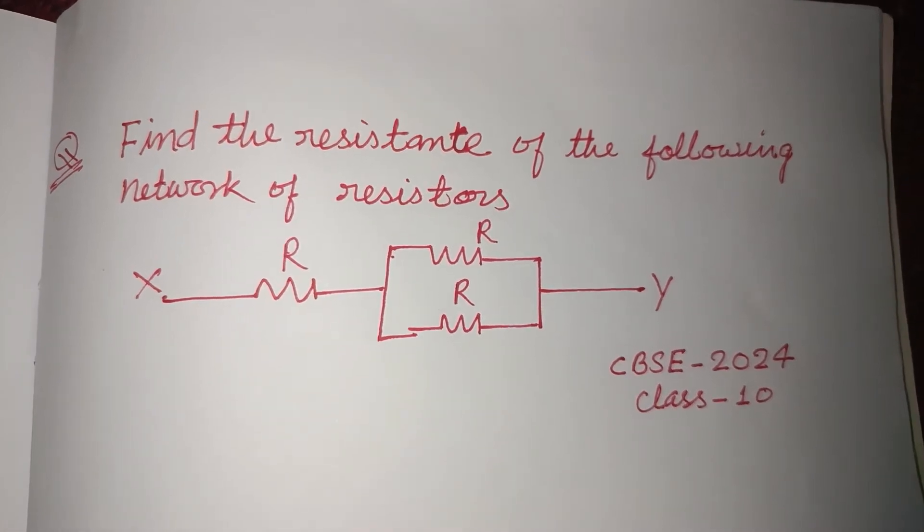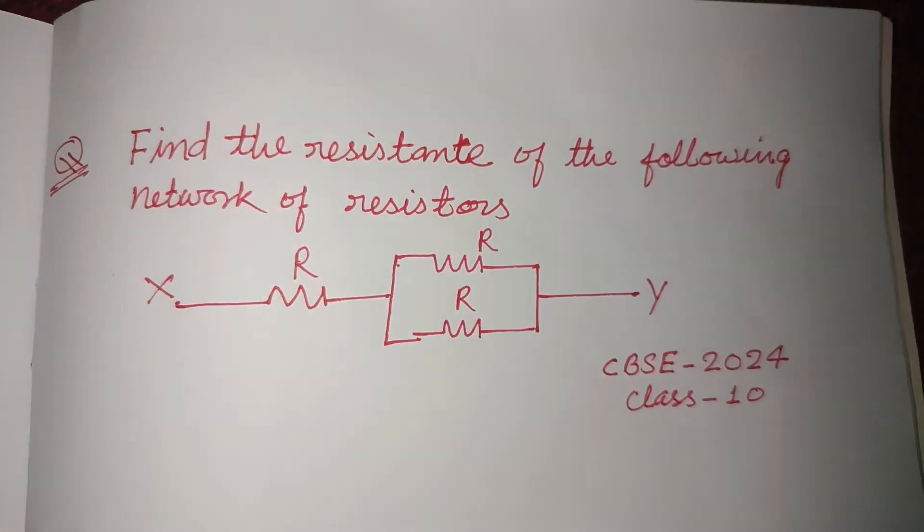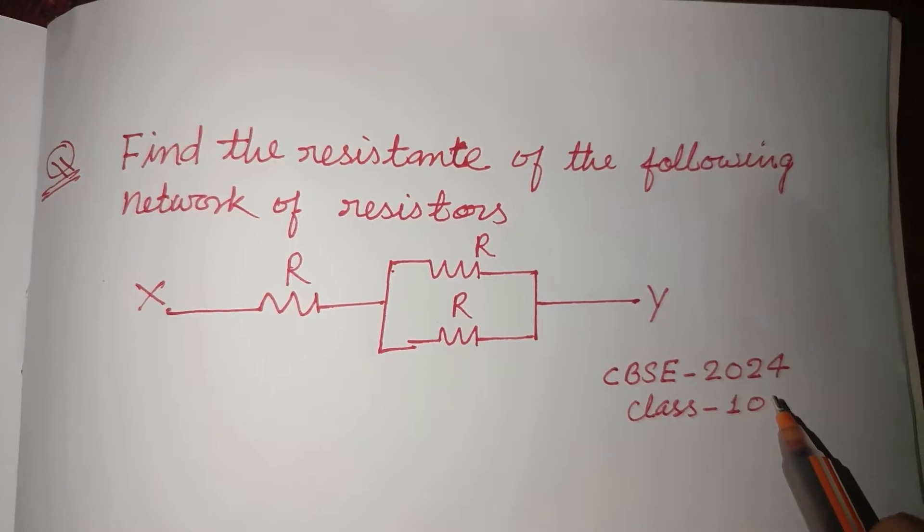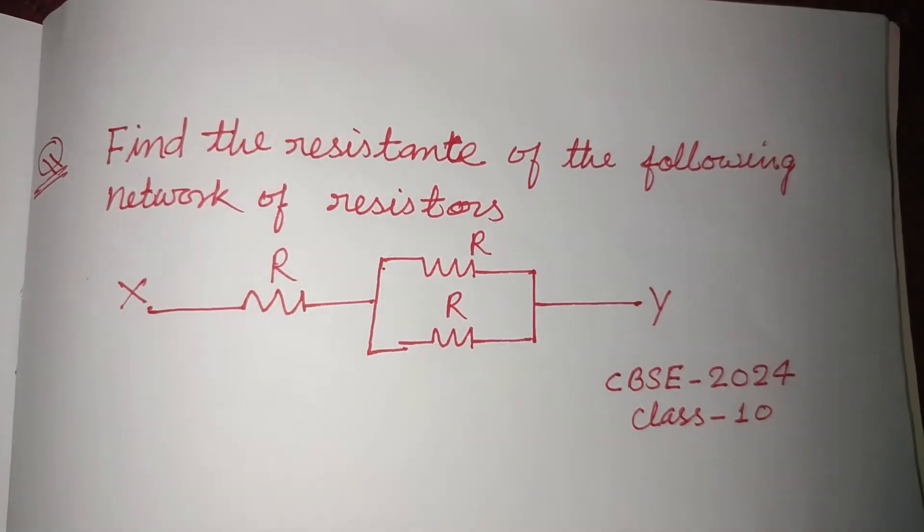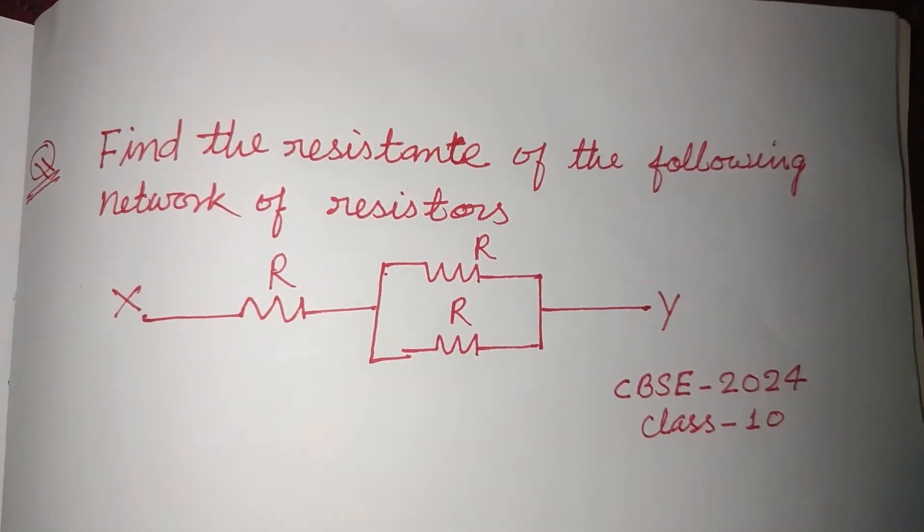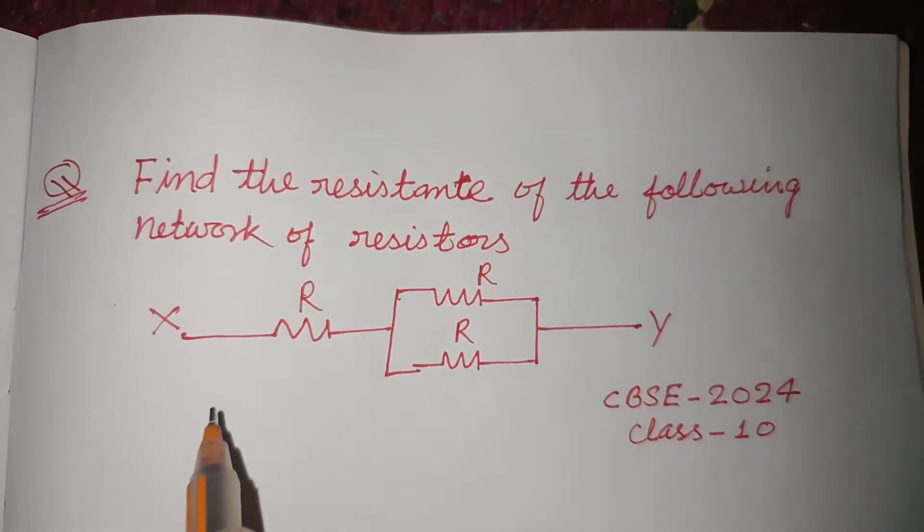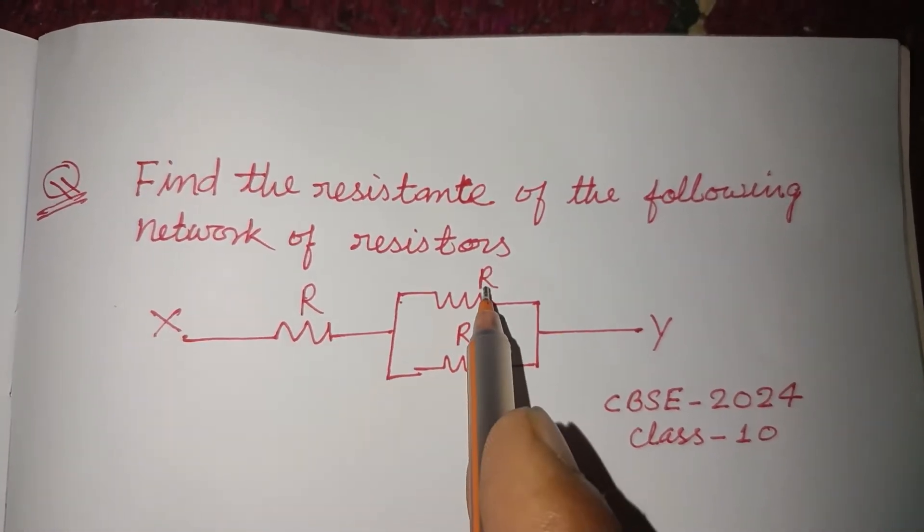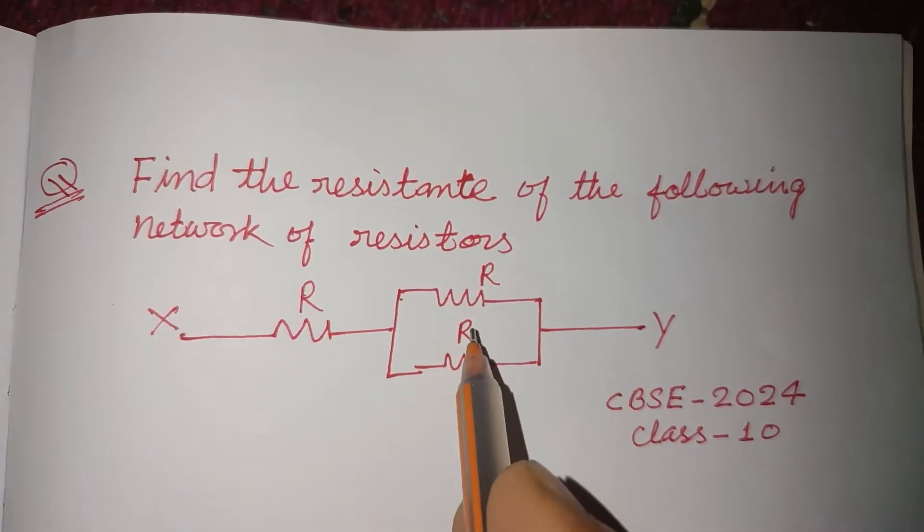Hello viewers, warm welcome to this YouTube channel. This is a question from CBSE board exam 2024 class 10: find the resistance of the following network of resistors. So here three resistors are given, two of them are in parallel having